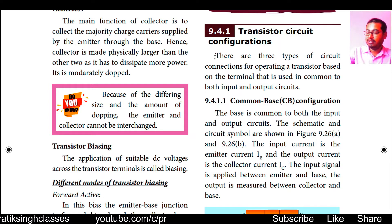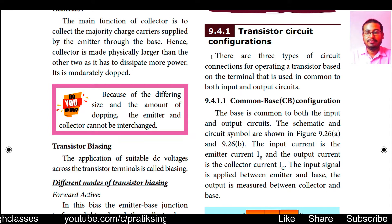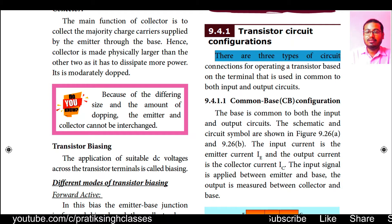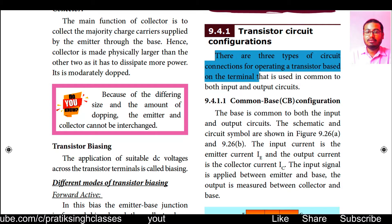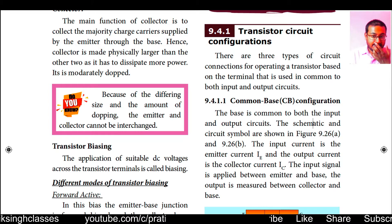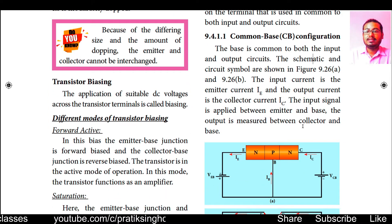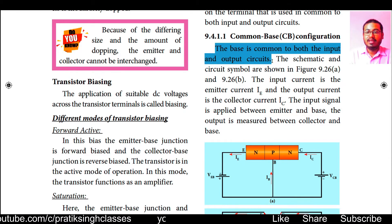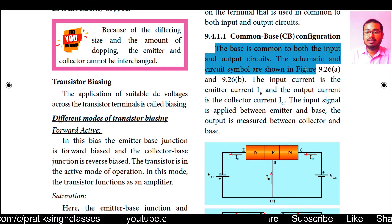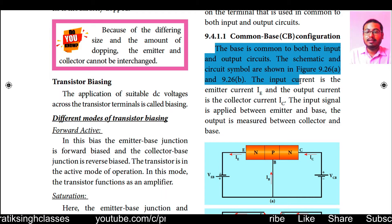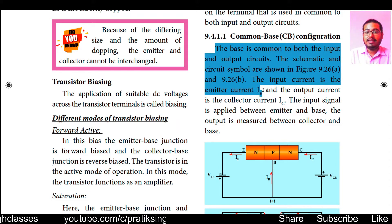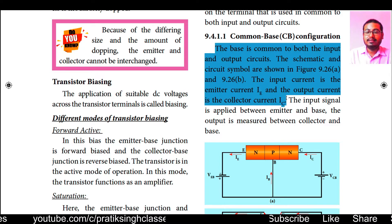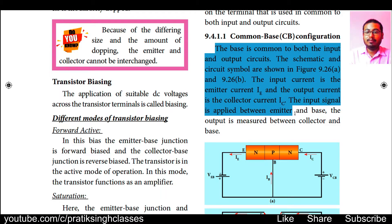Coming to transistor circuit configurations, there are three types of circuit connections for operating a transistor, based on the terminal that is used in common to both input and output circuits. The first is common base configuration or CB configuration, where the base is common to both the input and output circuits. The input current is the emitter current IE and the output current is the collector current IC.